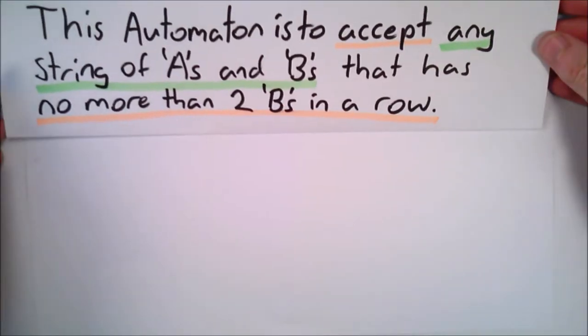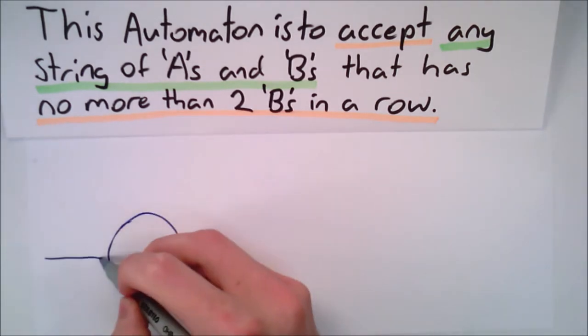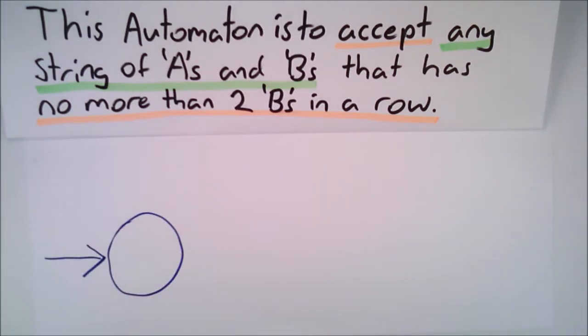So let's begin our diagram. A good starting point is the start state, a circle with an arrow into it. Let's call this state 0.